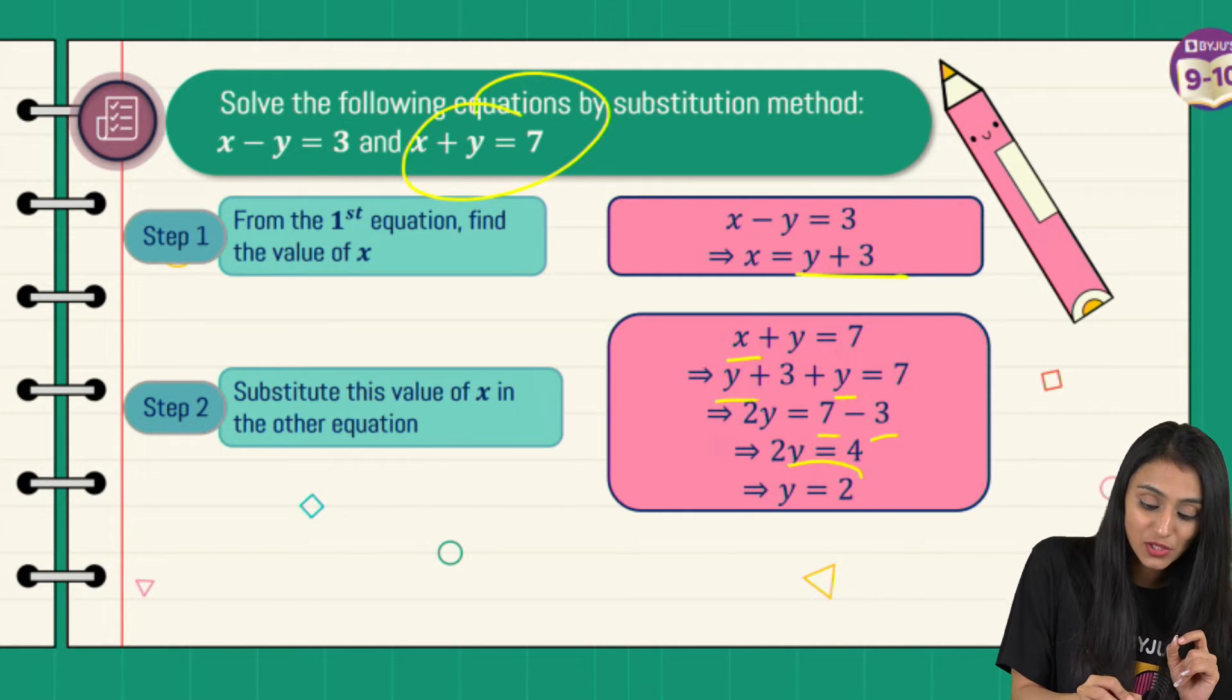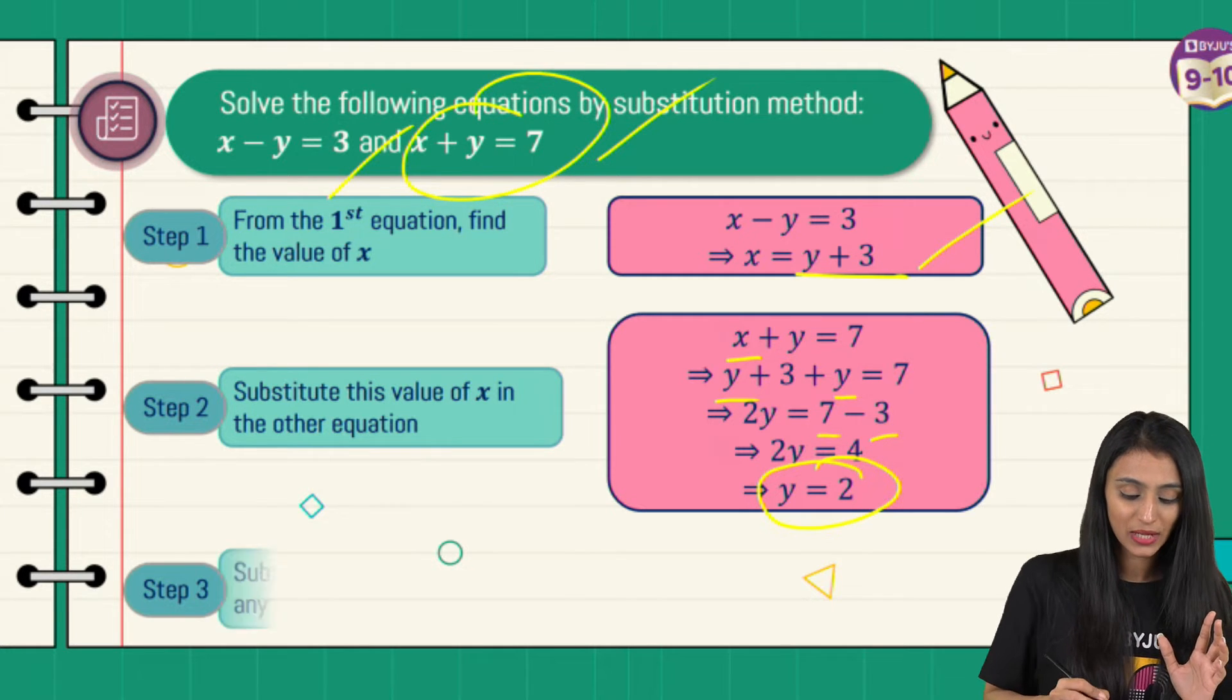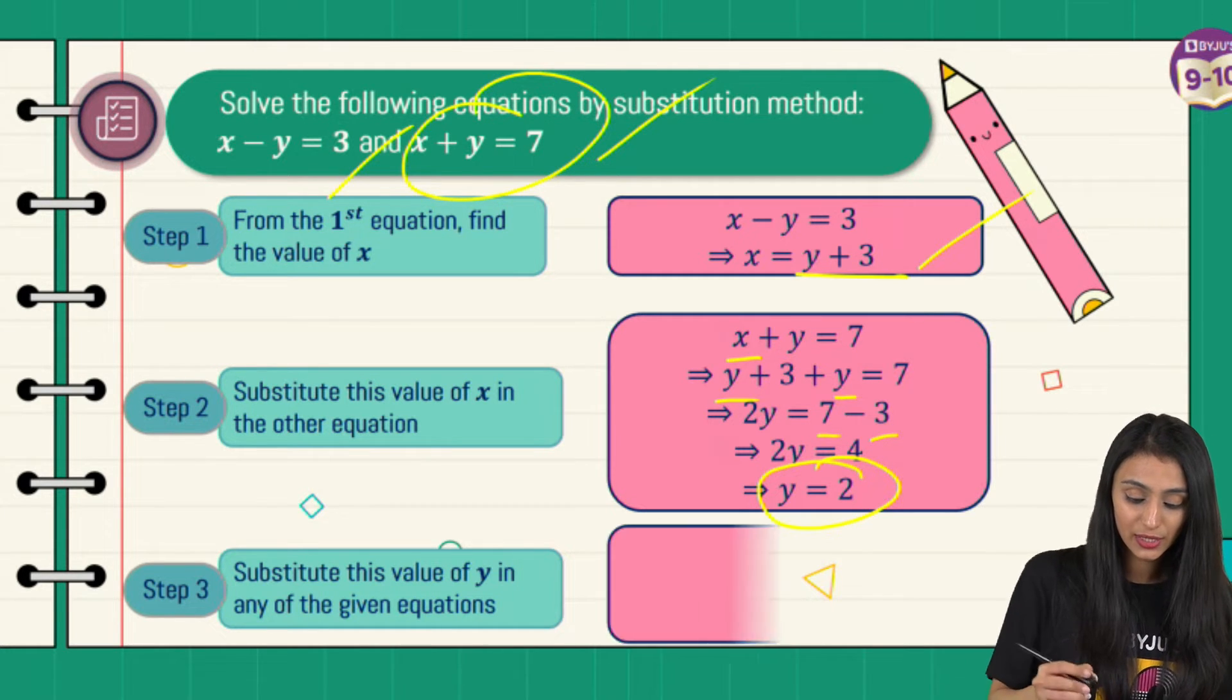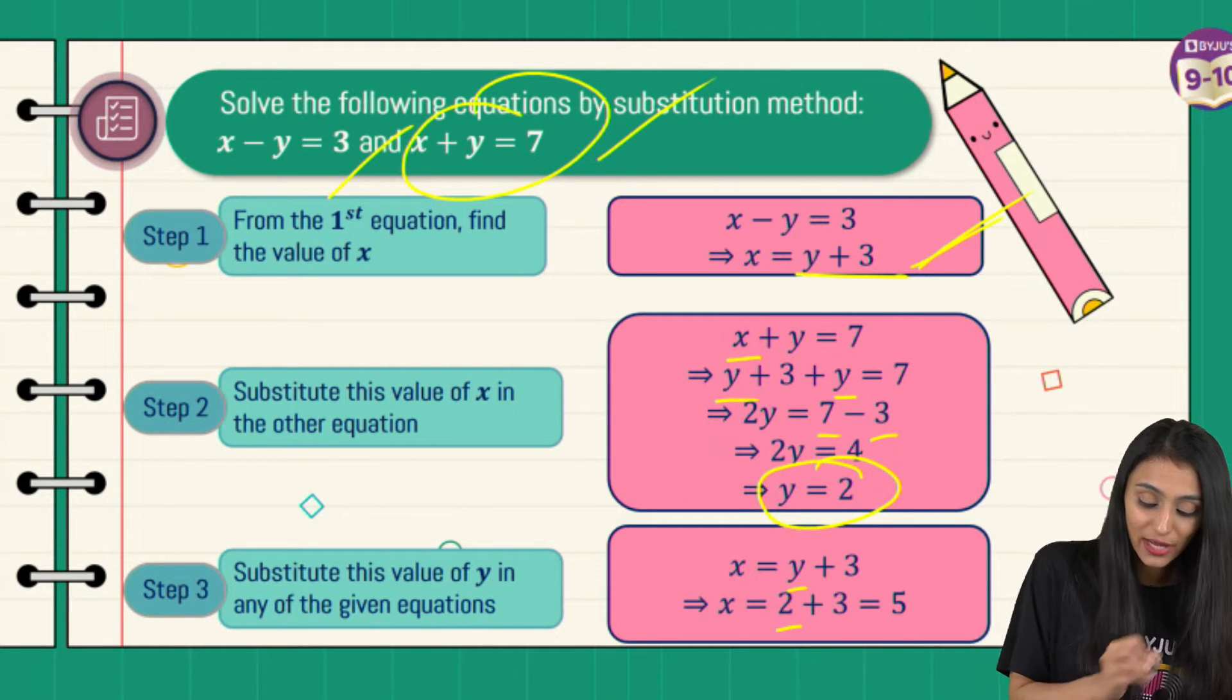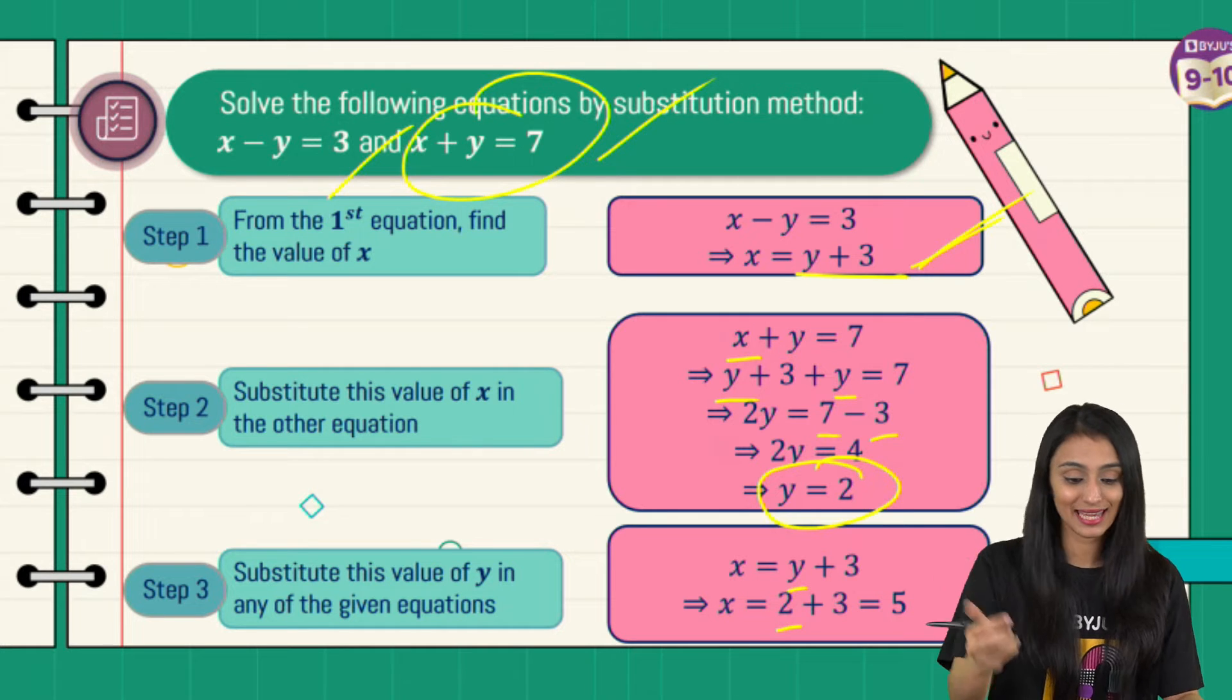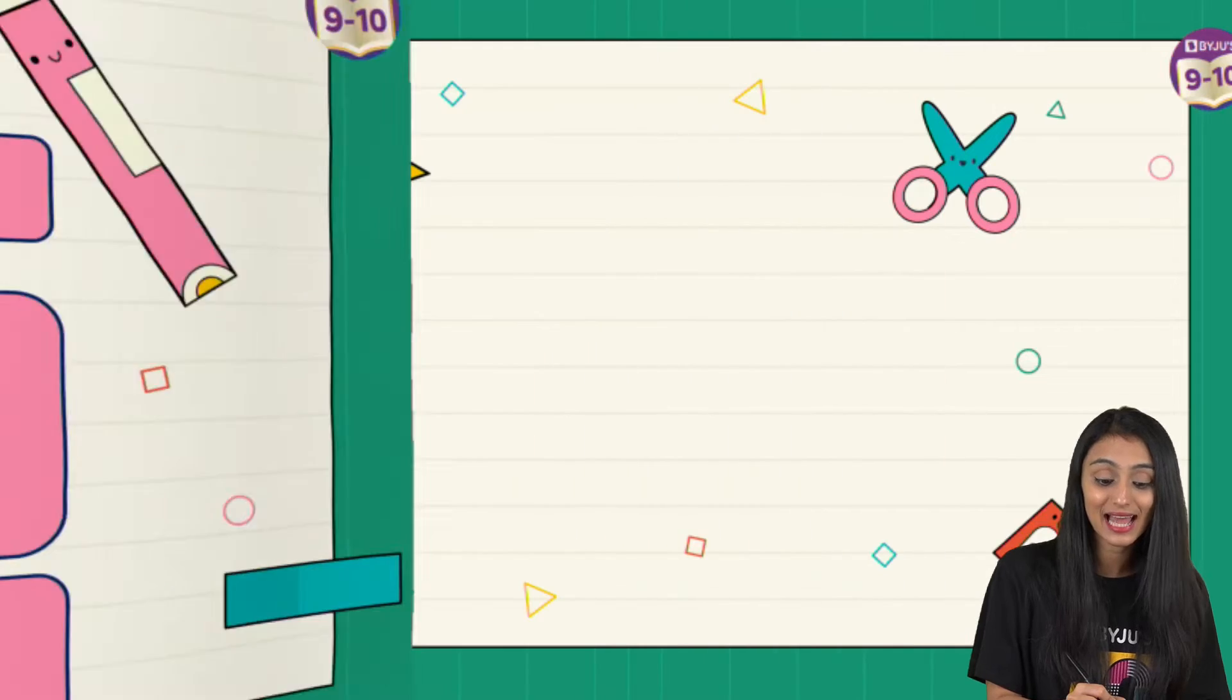Now I'm going to substitute this value of y in any of the equations. Let's say I'm substituting in this one. So what do I get? x equals y plus 3 equals, let's put y here, x equals 2 plus 3, that gives us 5. So we have got the value of both variables, x as well as y.